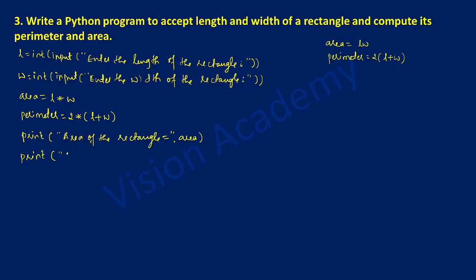Next I want to print the value stored in perimeter. So in double quotation marks I am going to write: perimeter of the rectangle. Put a comma and then write the name of the variable, which is perimeter. Now let us check out the output of this program.